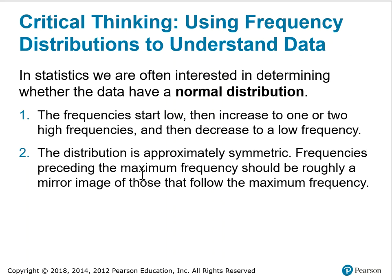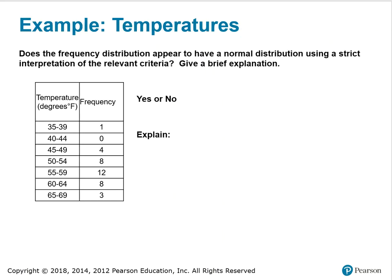Frequencies preceding the maximum frequency should be roughly a mirror image of those that follow it. In this particular case, notice that we do have a peak — this would be our peak point — but there is not that mirror image. There are not similar data values in the classes below that peak as there are in the classes above. So, no, there does not appear to be a normal distribution, and the reason is that the two criteria are not met.